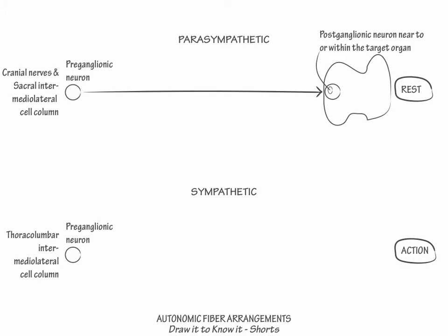In the parasympathetic arrangement, show a long preganglionic axon synapse on a ganglion within its effector tissue. Parasympathetic ganglia lie either very close to or within the wall of their target organ, and show a postganglionic parasympathetic fiber projecting deep into the target organ.